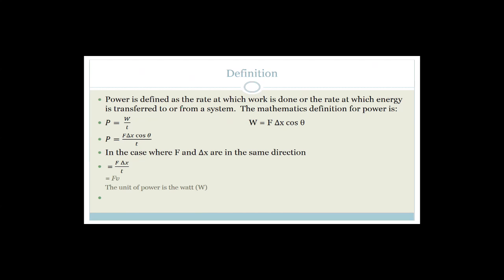Now let's talk about power. Power is defined as the rate at which work is done or the rate at which energy is transferred to or from the system. Power equals work divided by time. Since work equals F delta x cos theta, power can be written as F delta x cos theta over t. If force and displacement are in the same direction, cos theta equals 1, giving F delta x over t. Since delta x over t is velocity, power also equals force times velocity. Power is measured in watts.